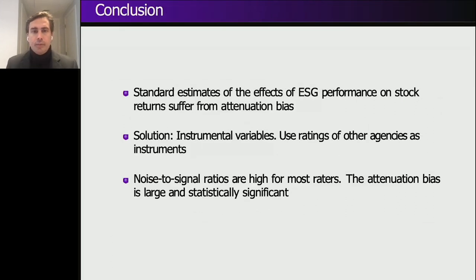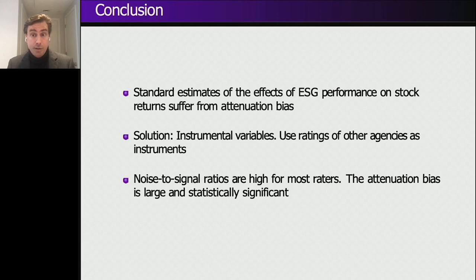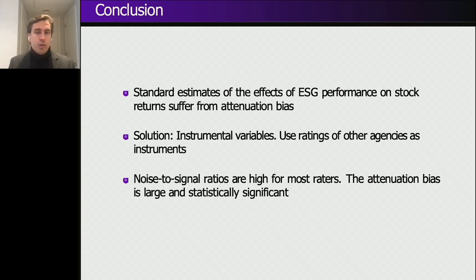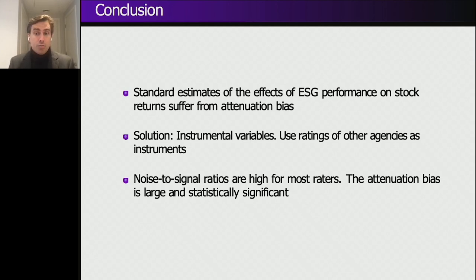In conclusion, standard regression estimates that look at ESG performance and stock returns suffer from what we call attenuation bias. They are approximately 60% lower than the true coefficients would be if corrected for noise. The solution we propose is an instrumental variable approach: we use ratings from other agencies to instrument an ESG rating and remove the noise. We also show that noise-to-signal ratios are quite high for most raters, and that the attenuation bias is large and statistically significant. Thank you.